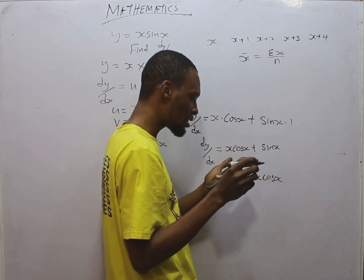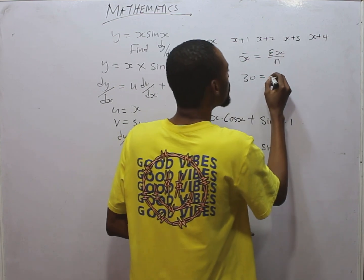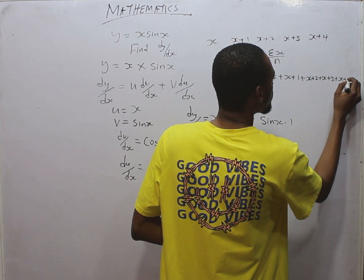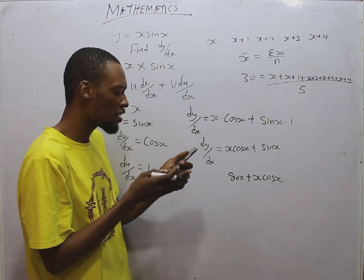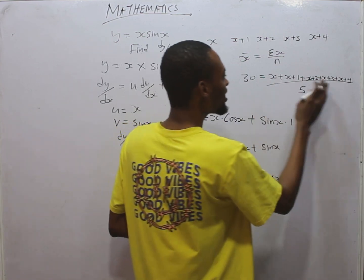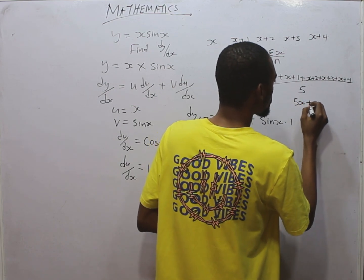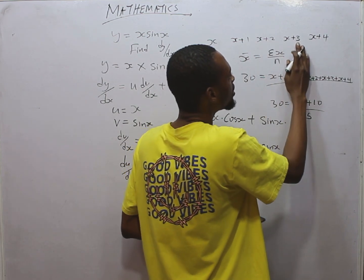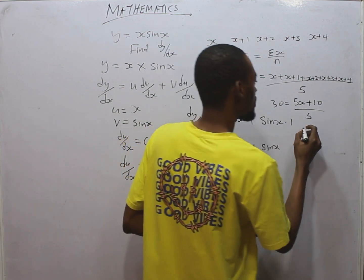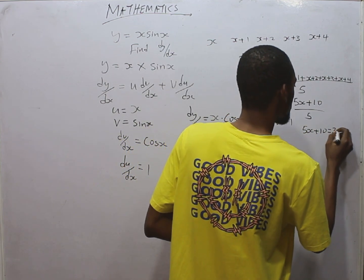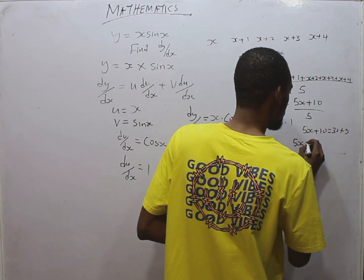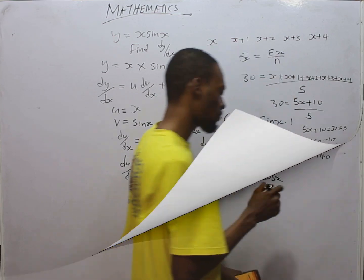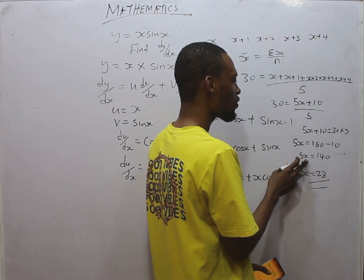We are told that the mean of the 5 is 30. What is mean? Mean S bar equals summation of S over N. We are given the mean to be 30, right? So 30 equals summing everything. You have S plus S plus 1 plus S plus 2 plus S plus 3 plus S plus 4 all over N is 5. Why 5? Because we have 5 numbers. Now adding the S, you have 5S plus 10 over 5. S plus S plus S plus S plus S is 5S. 1 plus 2, 3 plus 3, 6 plus 4, 10.